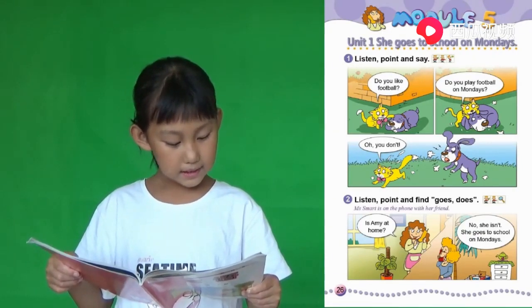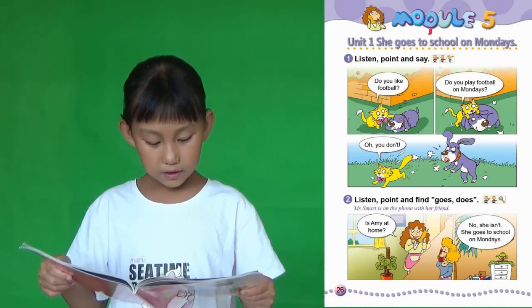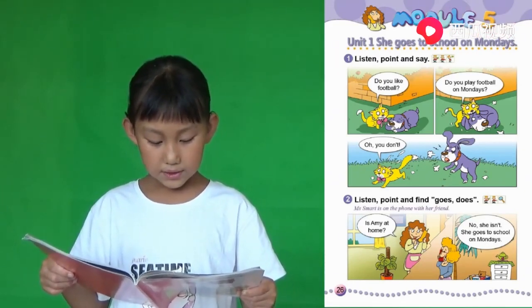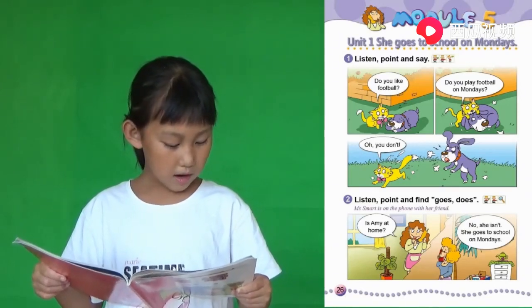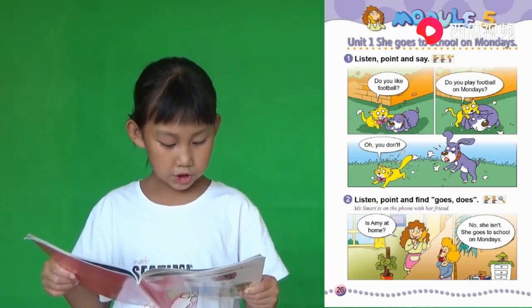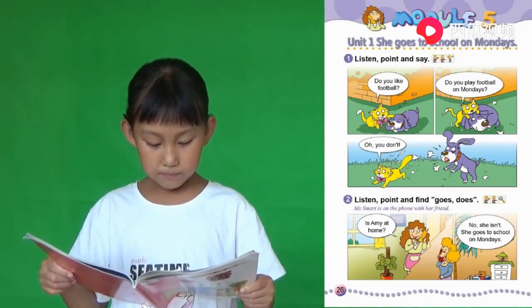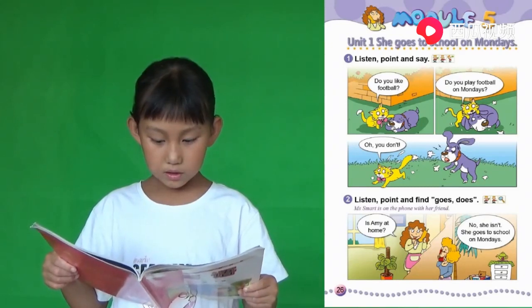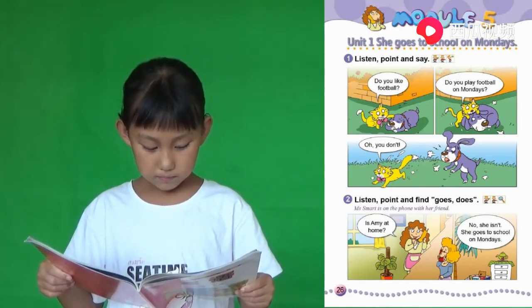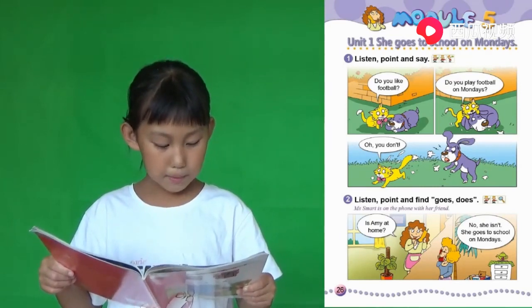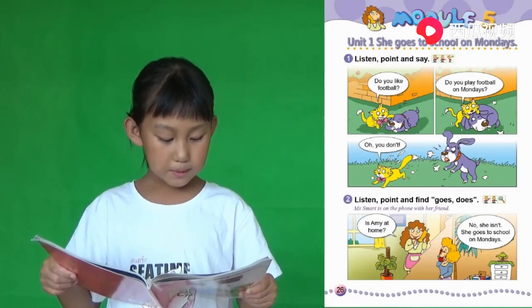Two. Listen, point and find. 二听，合找。 Miss Smart is on the phone with her friend.